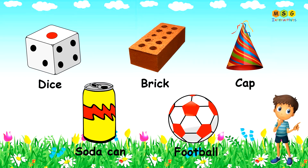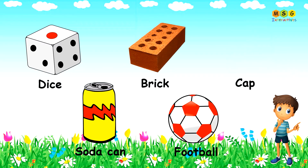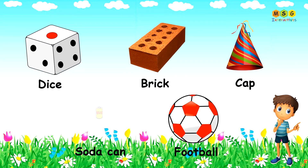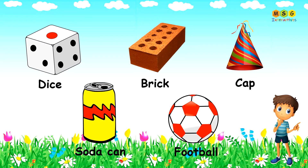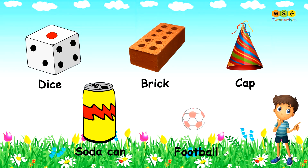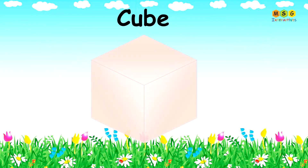The dice looks like a cube. The brick looks like a cuboid. The cap looks like a cone. The soda can looks like a cylinder. The football looks like a sphere.